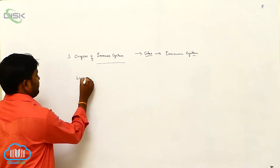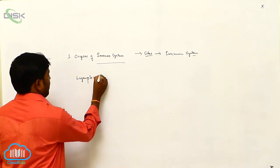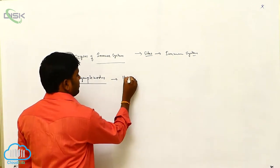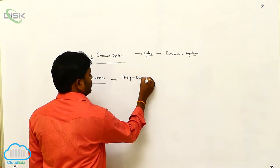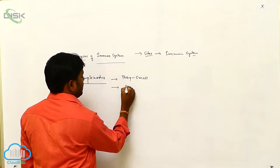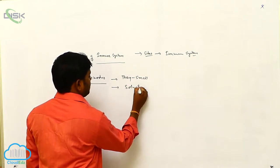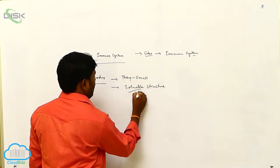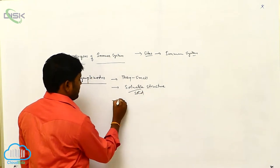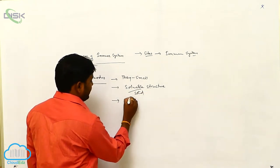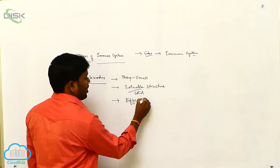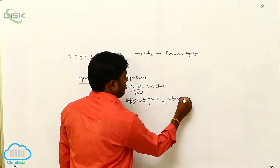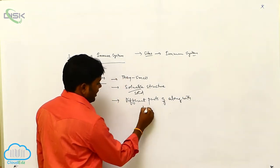Lymph nodes. So they are small, they are soluble structures or solid structures. So they are located at different parts along the lymphatic system.